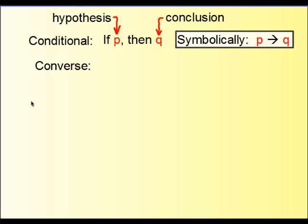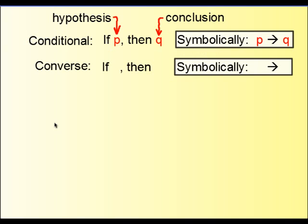Now the converse or reverse means it's basically written in the same manner. If something should happen then that causes something else to result. The only difference is that with the conditional, the converse is written in the opposite manner. So the conclusion for the conditional now becomes the hypothetical or hypothesis, and the hypothesis for the conditional now becomes the conclusion.